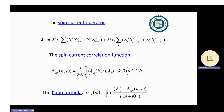The spin current operator is given by an equation with two different exchange interactions. We then define the spin current correlation function, or Green's function, given by the density of the spin current operator at different times. We employ the Kubo formulas to obtain the longitudinal spin current given by this formula.